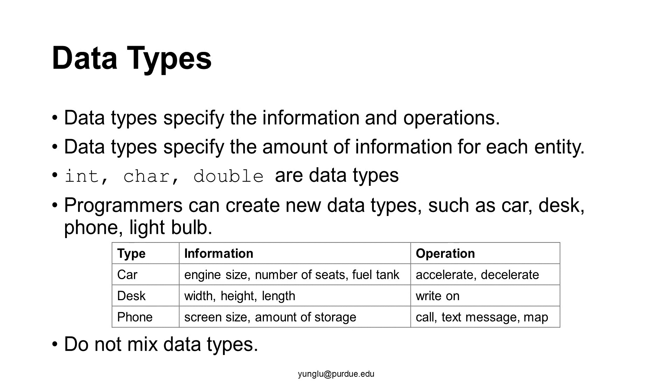If you have a data type of a phone, the information may include the size of the screen, the amount of storage, and so on. You can use a phone to make a call or to send a text message. Your phone may have map for navigation when you walk. You probably do not want to carry your desk when you walk. Your desk does not help you navigate. You cannot mix data types because you cannot send a text message using a car. Nor should you accelerate a phone. A phone has no engine. Do not mix data types because doing so makes no sense.